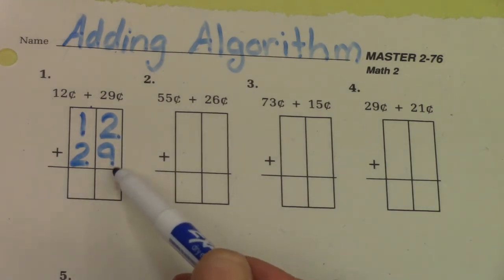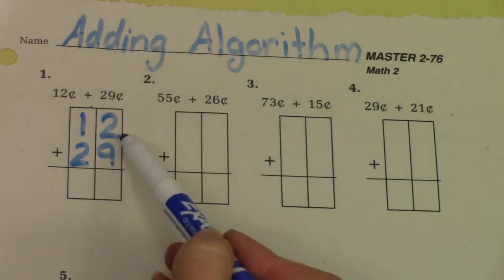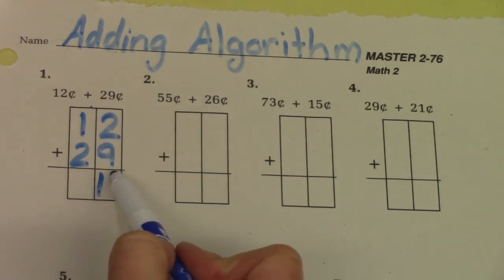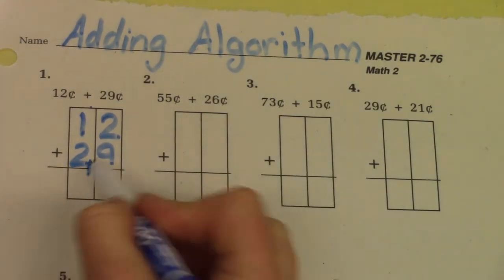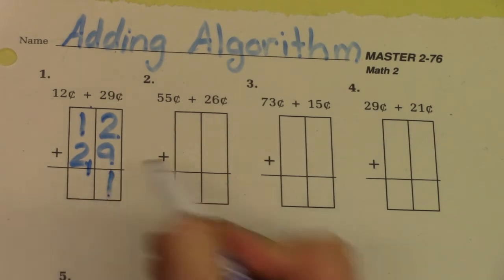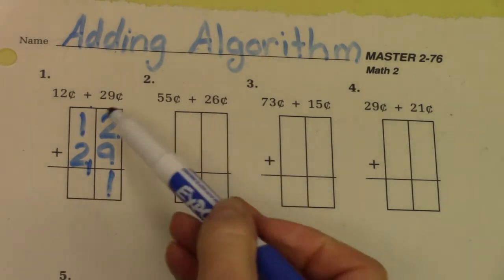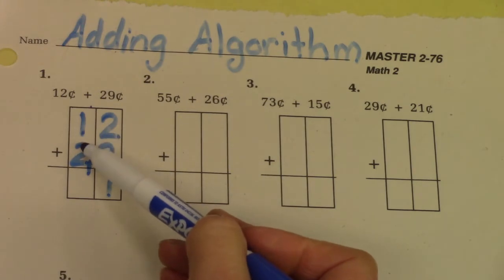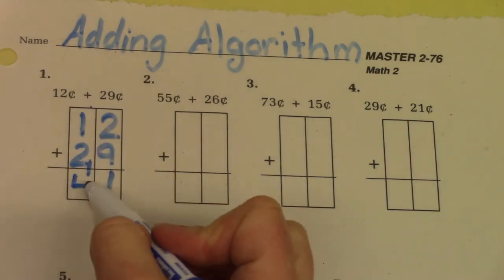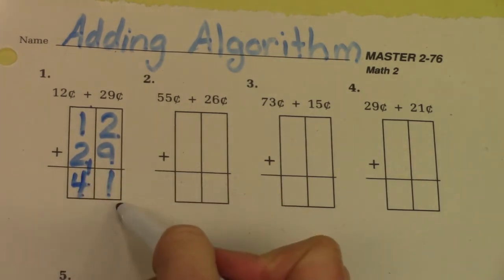We're going to start here in our ones place. 9 plus 2 is 11 but I cannot put 11 in one column. I'm going to put a group of 10 over here and the 1 from the 11 over here. I have 1 plus 2 which is 3 plus one more which is 4. My answer now is 41.